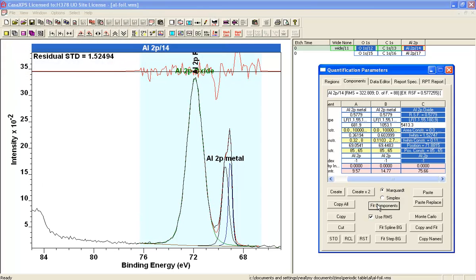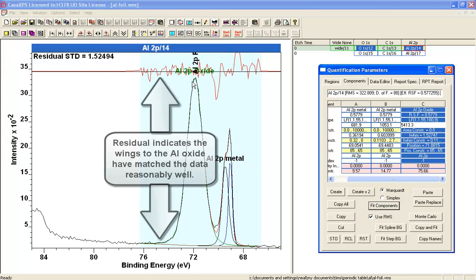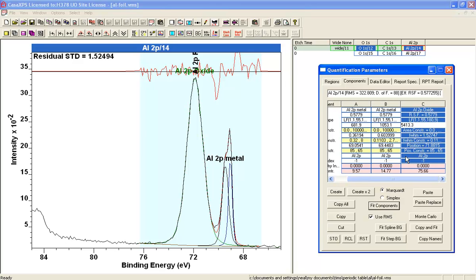And then say fit again, and now I've got a new fit here, and you can see now that the oxide is starting to pick the data quite nicely. So that adjustment to the peak shape has worked quite well.